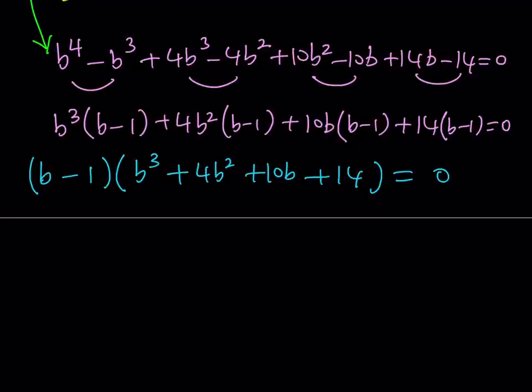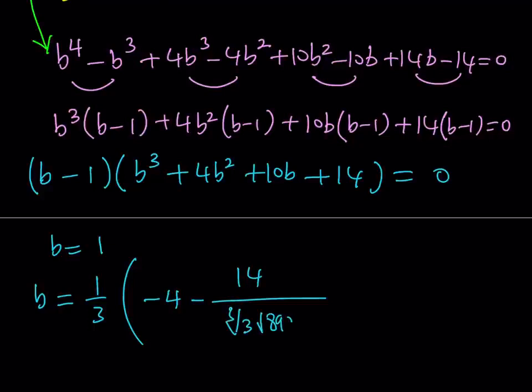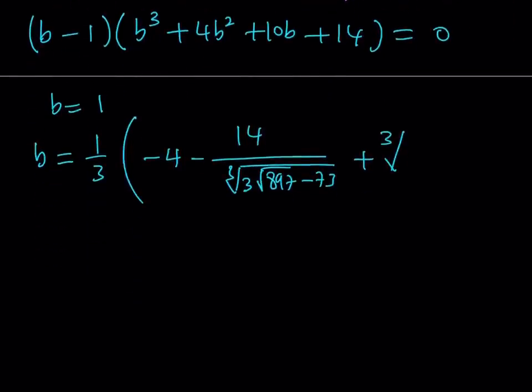Well there's a cubic formula but again I don't think you want to get into this but there's no other way obviously. You have to use the Cardano's method or actually there's another way to do this and that's called Wolfram Alpha. Isn't that a beautiful tool? If you just enter this equation into Wolfram Alpha maybe I'm going to include the link in the description so that you can check it out yourself too. But anyways this equation gives us B equals 1 obviously and another solution which can be written as follows. B equals 1 over 3 times the quantity negative 4 minus 14 over the cube root of 3 times the square root of 897 minus 73, such a nice number right? Plus the cube root of the same expression 3 times the square root of 897 minus 73 and this is the other solution.